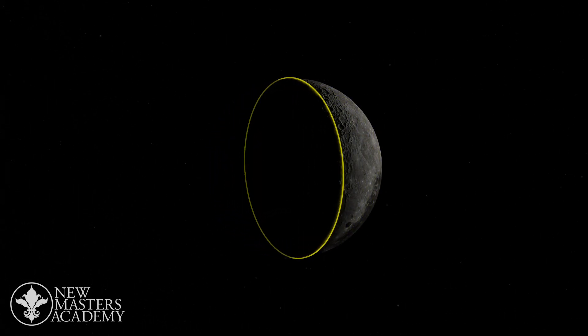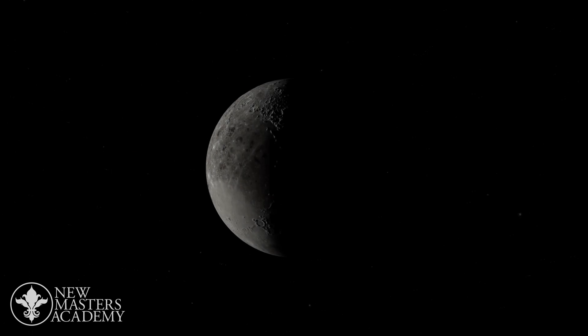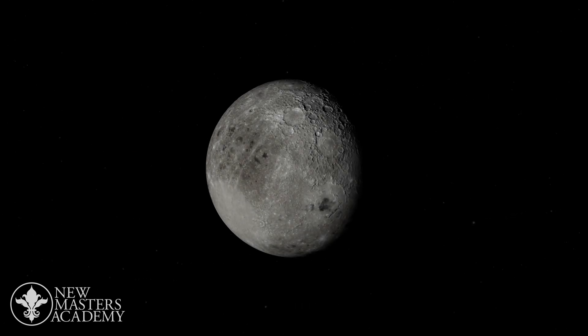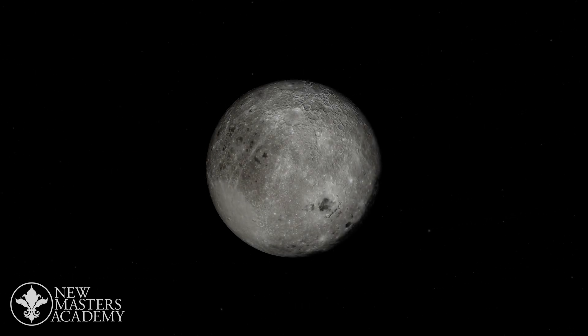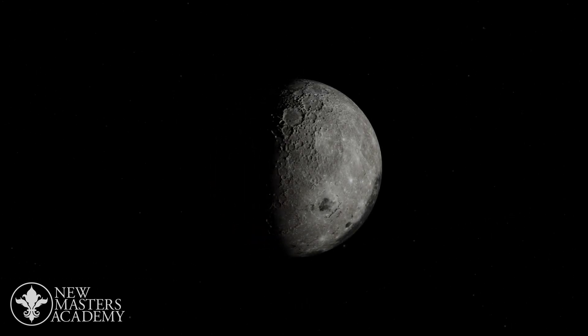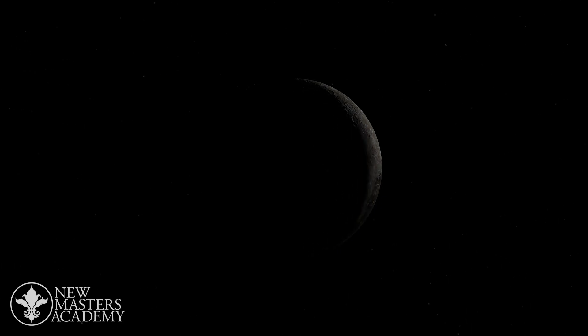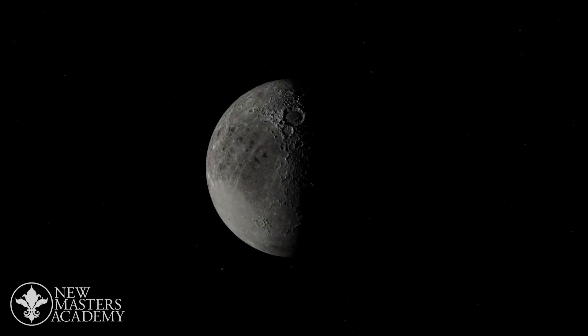So what exactly causes this effect to happen? Why is the shape of the terminator line on a sphere always an ellipse? Let's look at this scene from another angle.